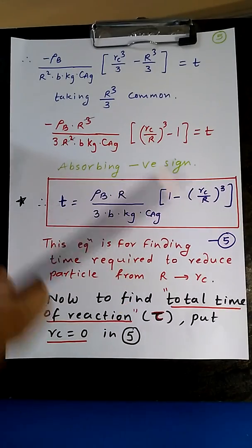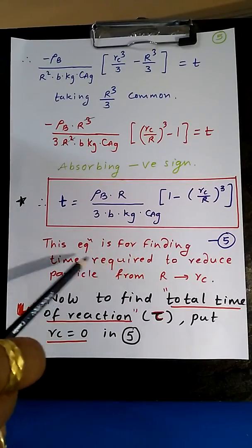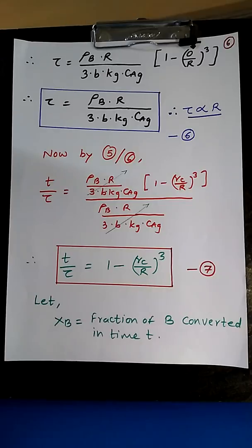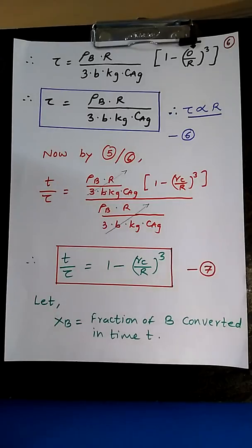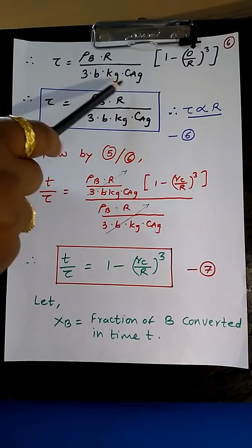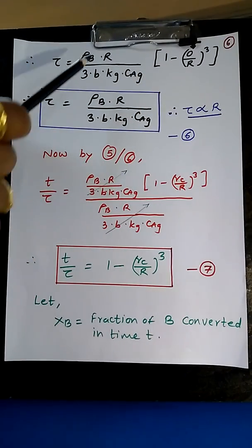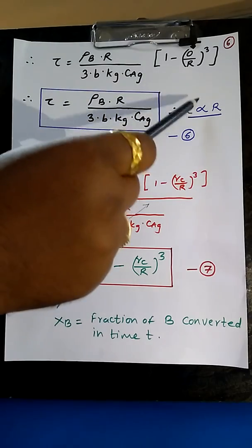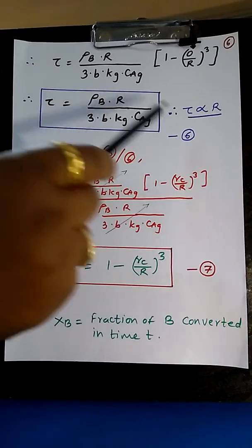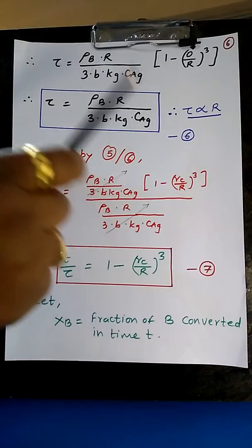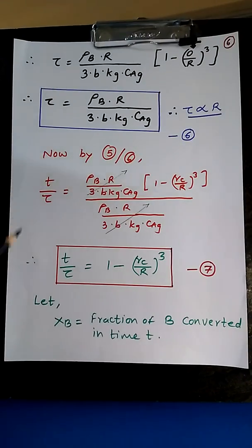This important equation gives the time required to reduce the particle size from R to Rc. To find the total time of reaction τ, substitute t = τ and Rc = 0 (since at completion Rc equals 0). So τ equals ρB × R / (3 × b × Kg × CAg) × [1 - 0] equals ρB × R / (3 × b × Kg × CAg). We observe that τ is directly proportional to R, since all other quantities are constant during the reaction.